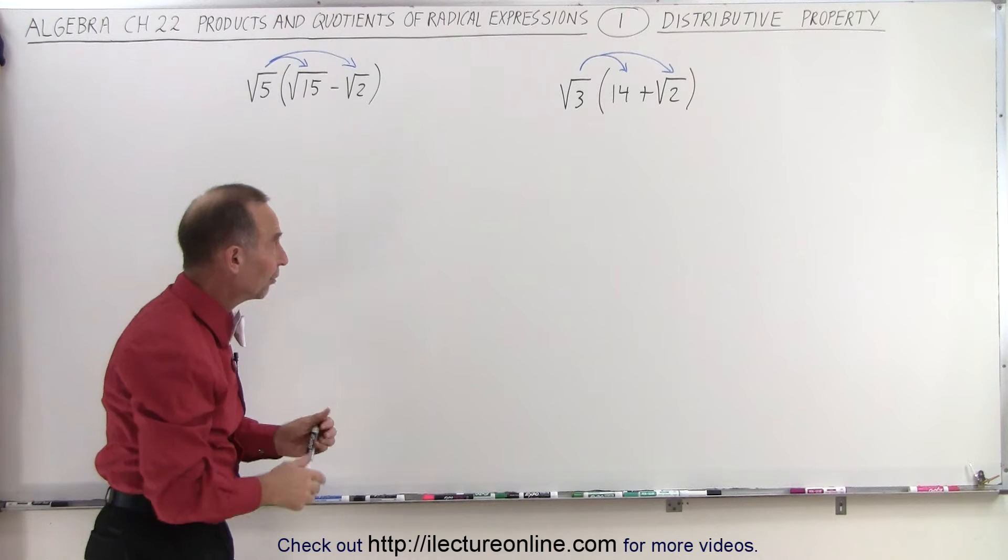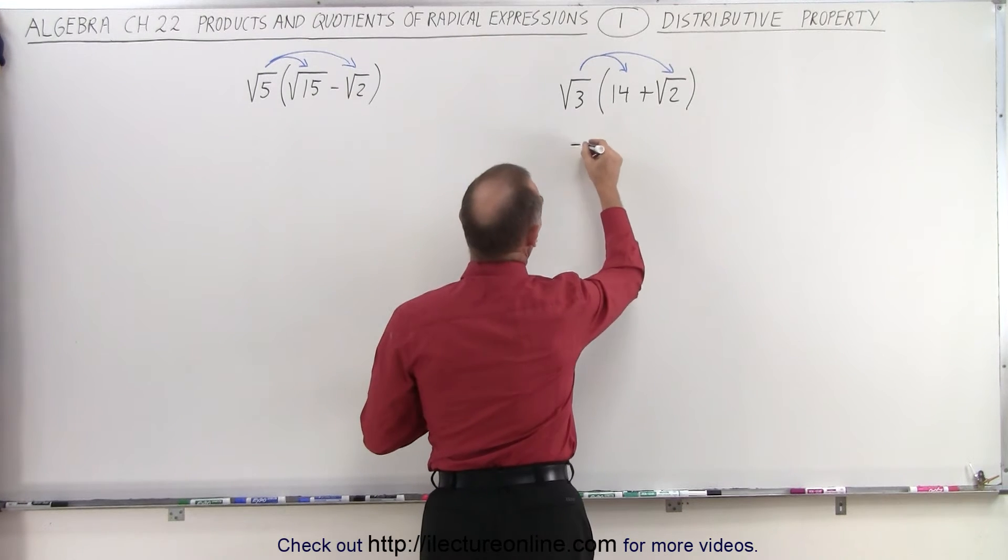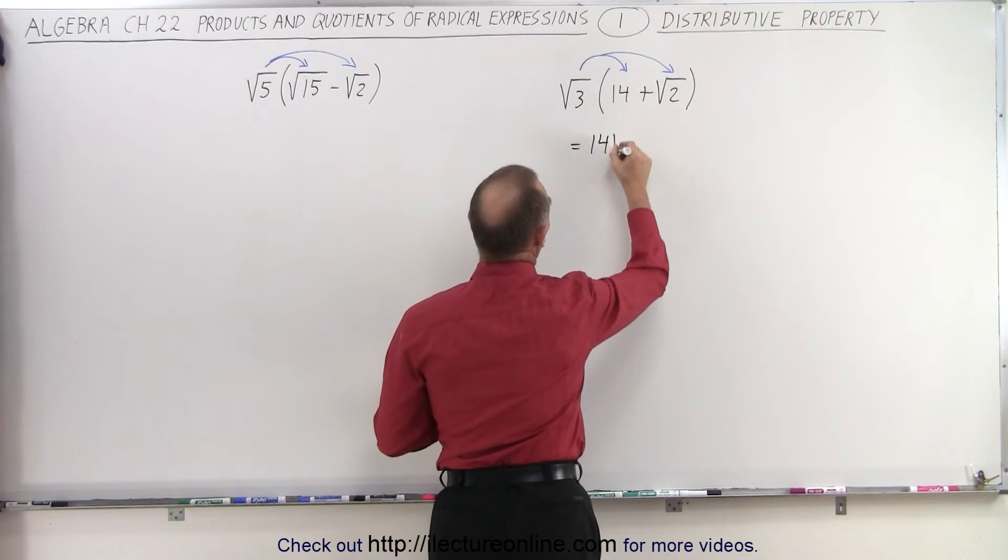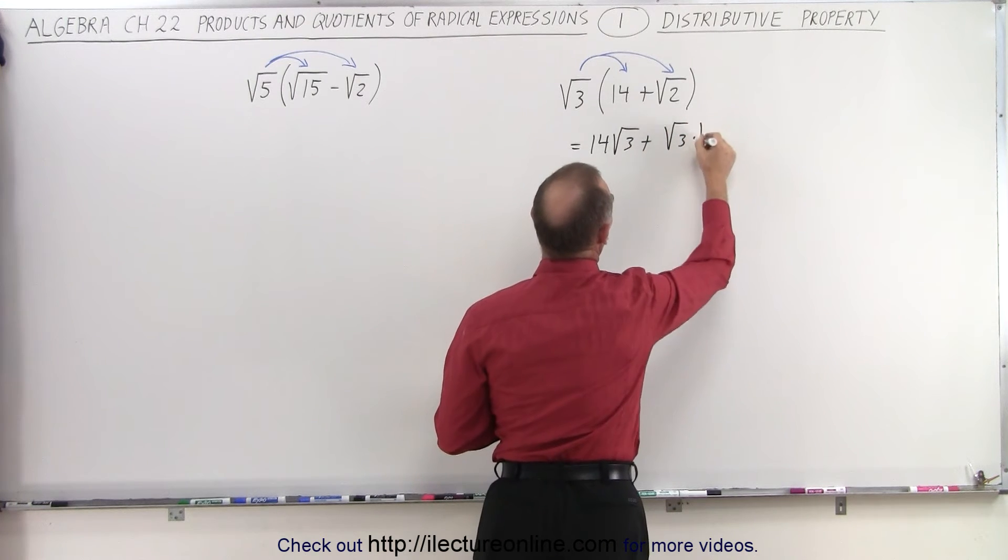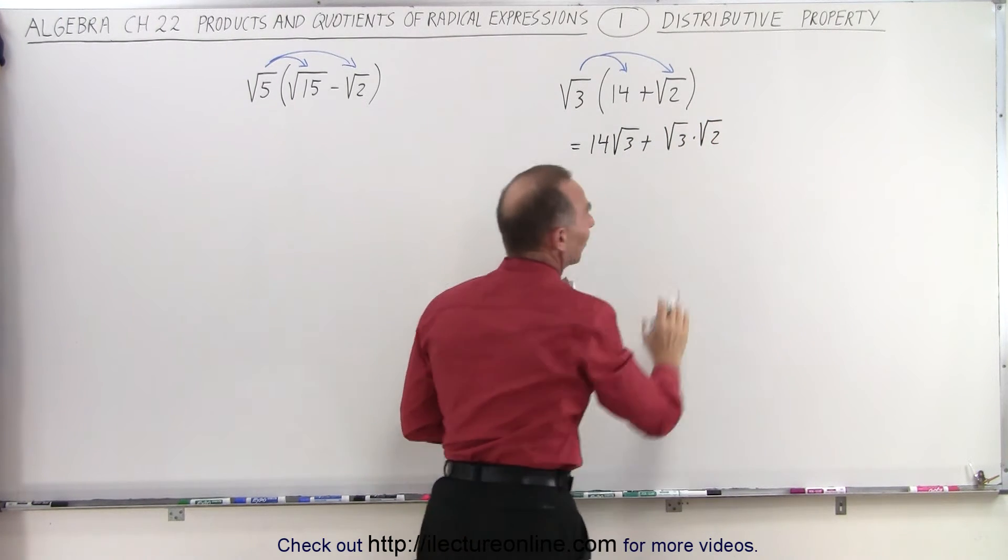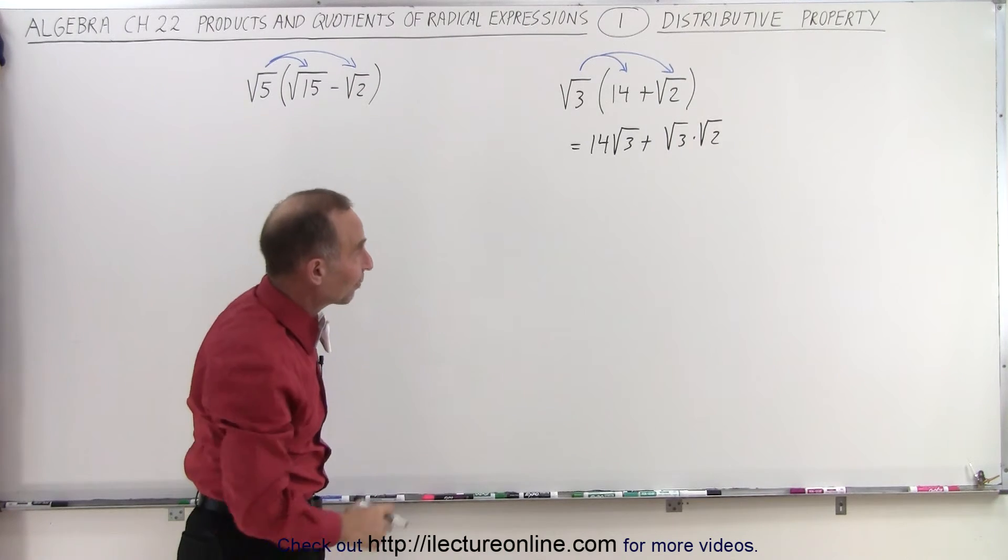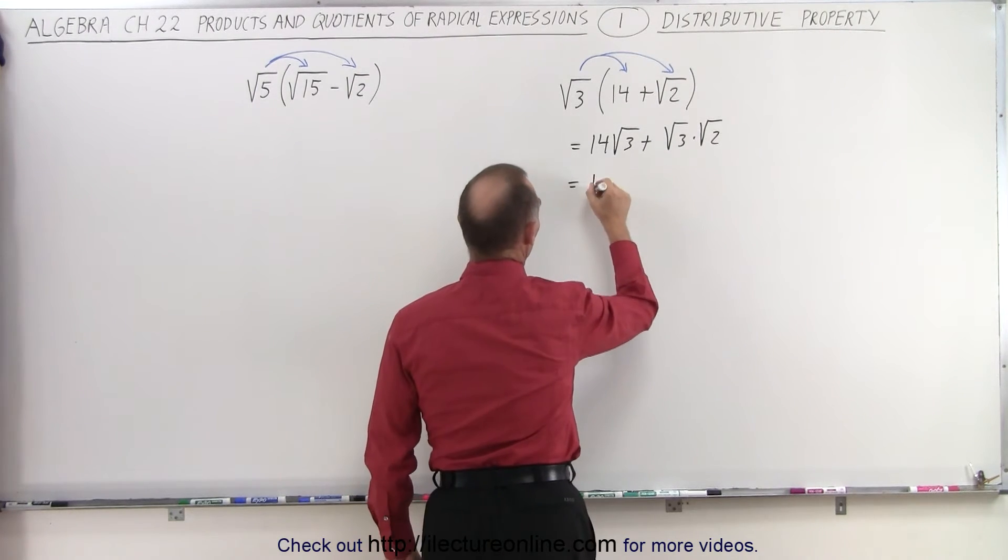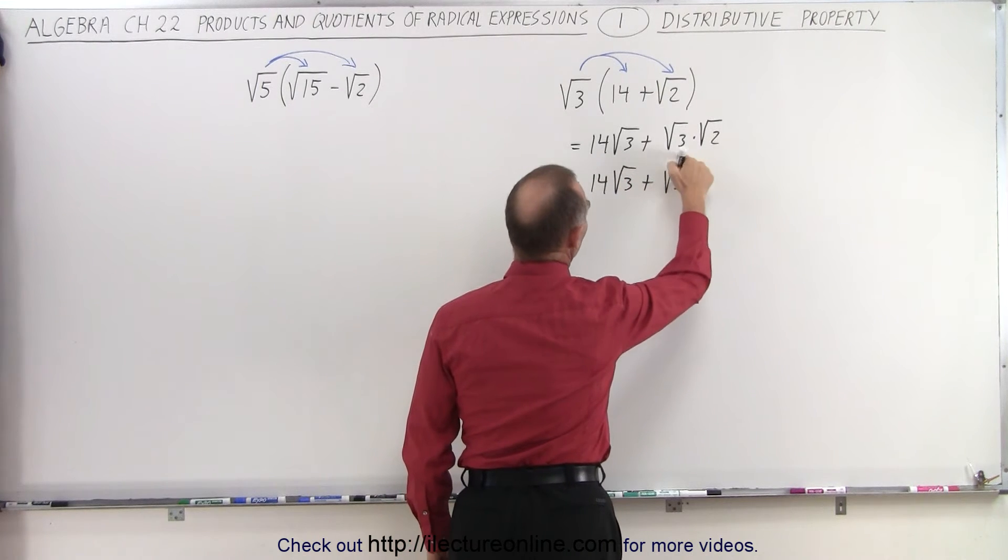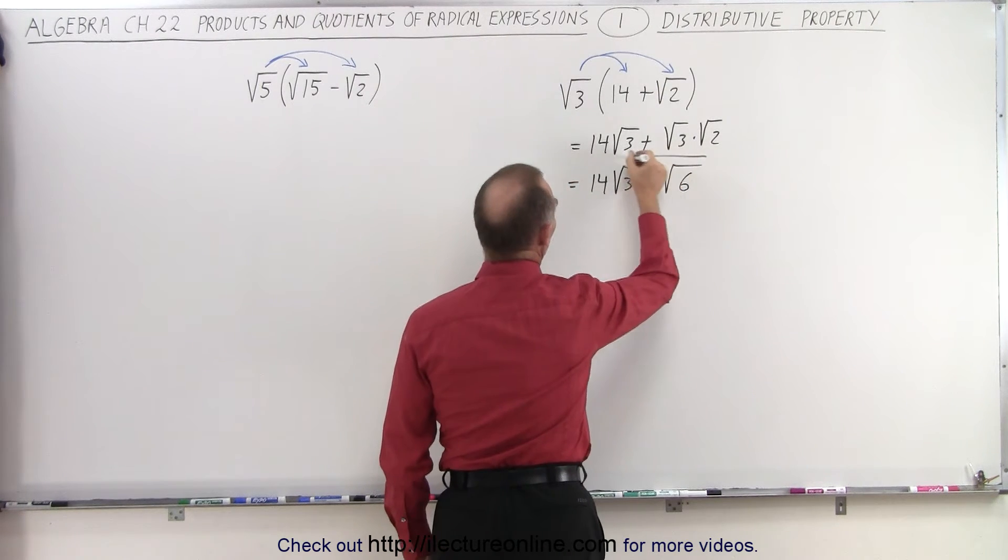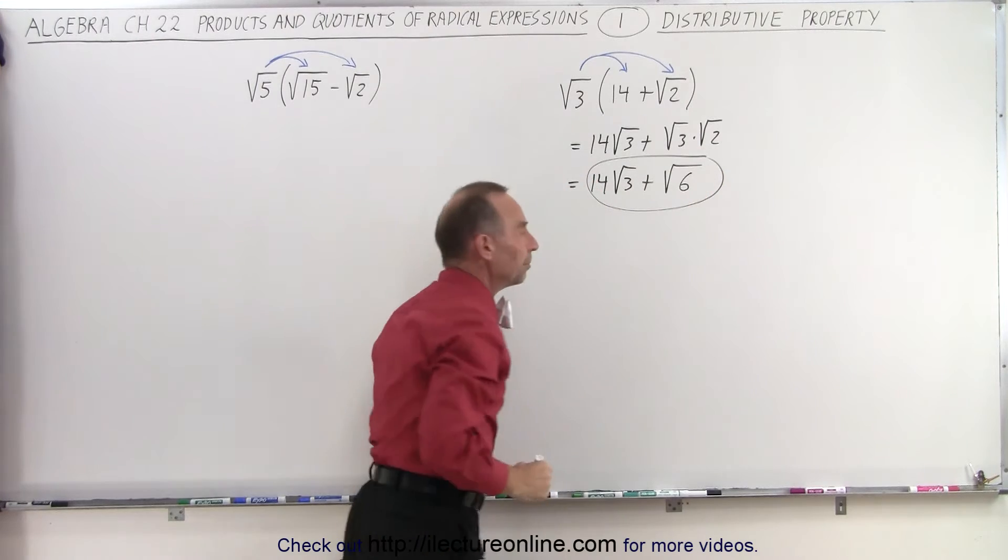So when we do that, we get the following result. This becomes equal to 14 times the square root of three plus the square root of three times the square root of two. And now we simply have to simplify what we have left. So this can be written as 14 times the square root of three plus the square root of six. And that would be the result of that multiplication.